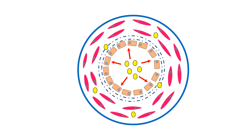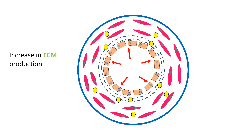Along with the deposition of these plasma proteins in the vessel wall, there is also increased production of extracellular matrix by the smooth muscle cells in response to the chronic hemodynamic stress.